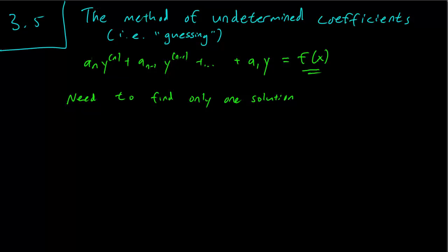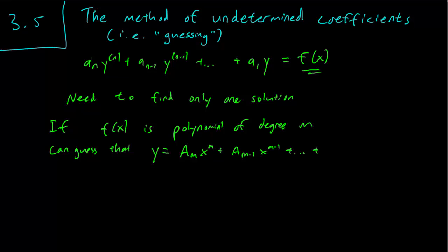Here's what I mean. If f(x) is a polynomial of degree m, then we can guess that y is a polynomial of degree m. So in other words, y equals capital Am x^m plus Am-1 x^(m-1) plus... plus A0.